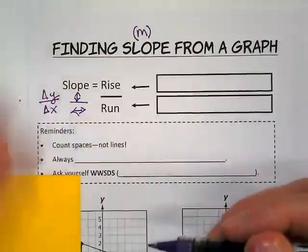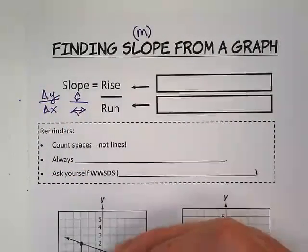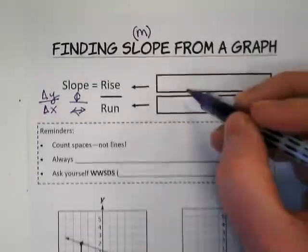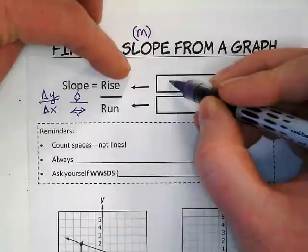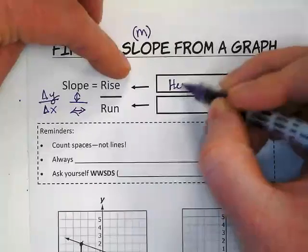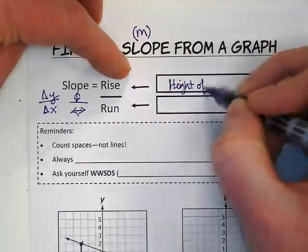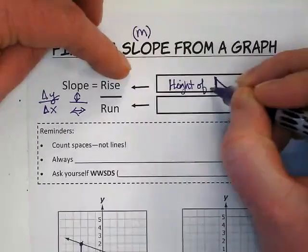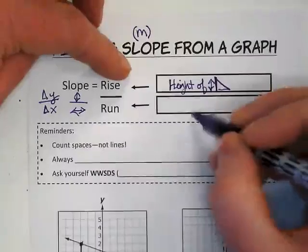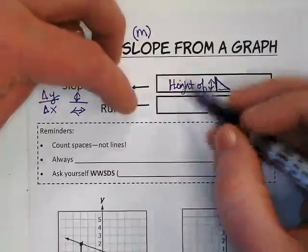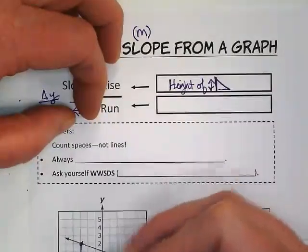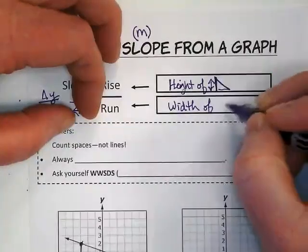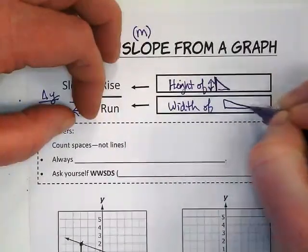And I can draw a triangle showing the rise and the run. So when I come back up here to my definition, I want you to think about the slope rise part as the height of our triangle, how high up it goes. Or it could be upside down and go down. The run is going to be this part across, the width of the triangle.